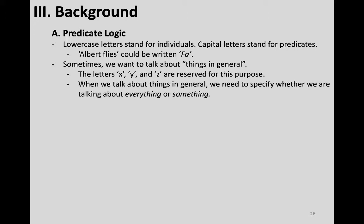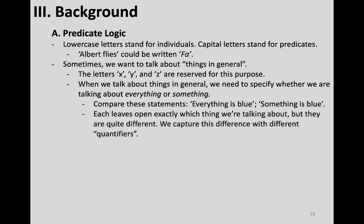When we talk about things in general, we need to specify whether we're talking about everything or something. In principle, we could also specify exactly two things, three, four, five, and so on, but we're just going to introduce two ways: talking about either everything or at least one thing. Compare 'Everything is blue' and 'Something is blue' — neither says anything about a particular individual; they leave open which individuals they're talking about.